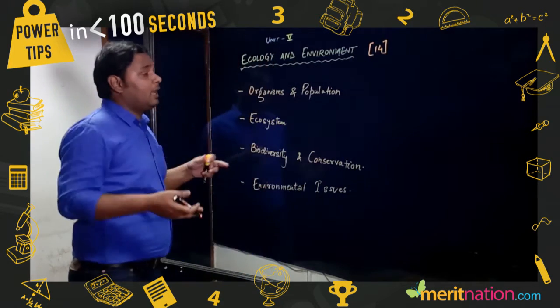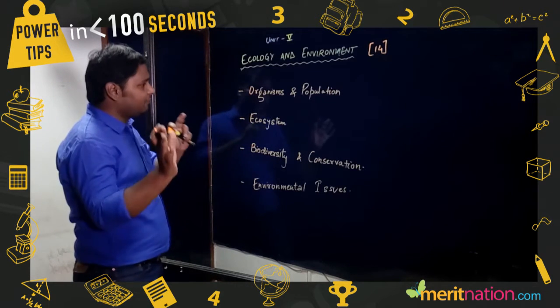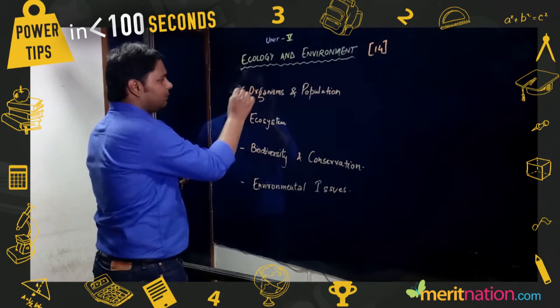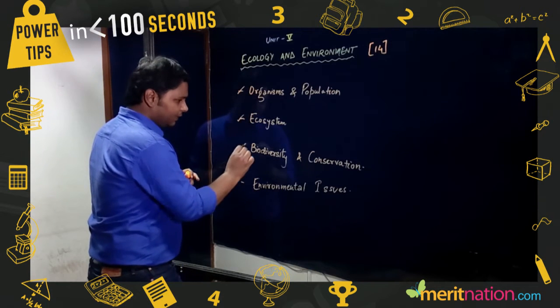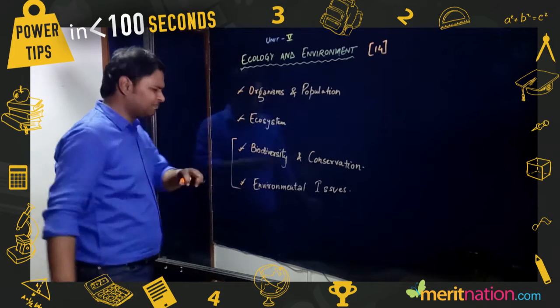Why it is more important is because five mark questions generally come from this unit. There are four chapters in this unit: Organism and Population, Ecosystem, Biodiversity and Conservation, and Environmental Issues. Normally five mark questions come from these chapters.